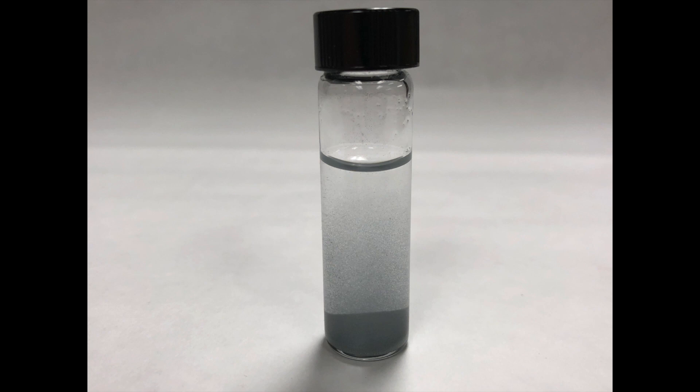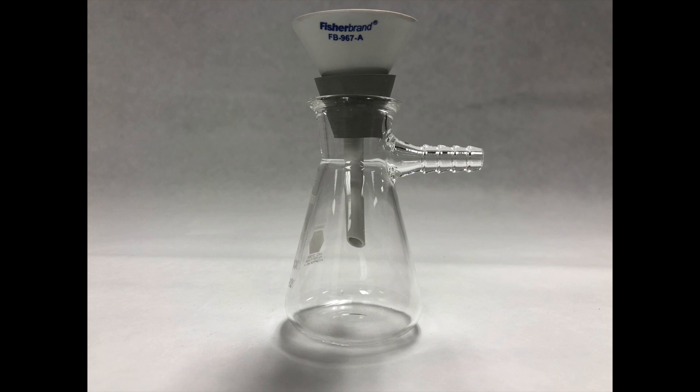In this video, you will learn how to perform vacuum filtration to separate a solid-liquid mixture using a Hirsch funnel. Using vacuum filtration, the liquid part of your solution, called the filtrate, is forced through the filter paper using suction, leaving the solid, also called the precipitate, in the funnel.